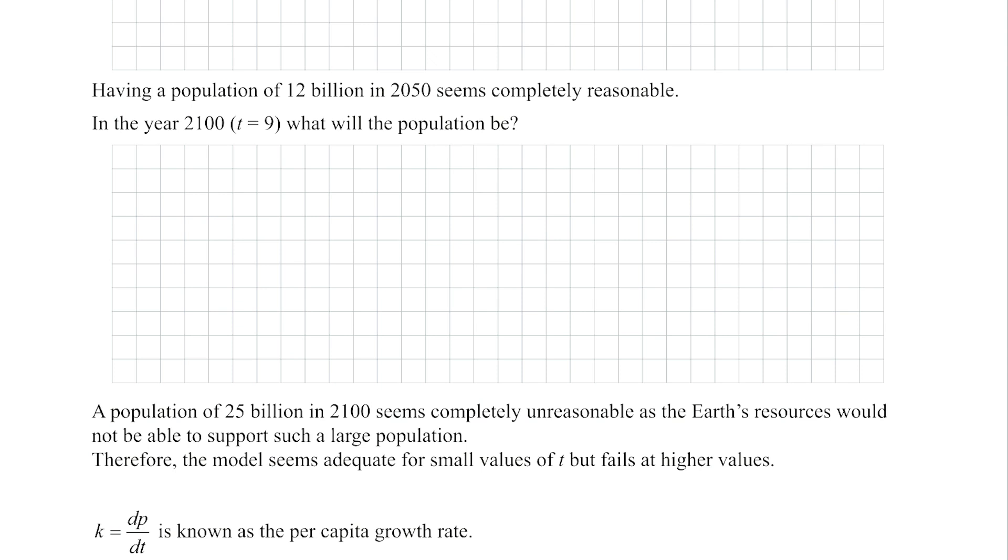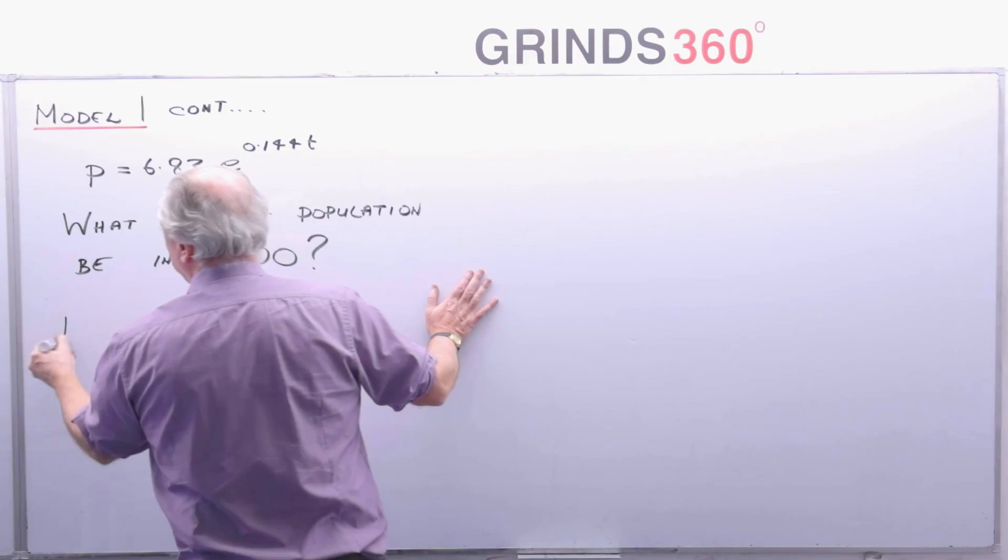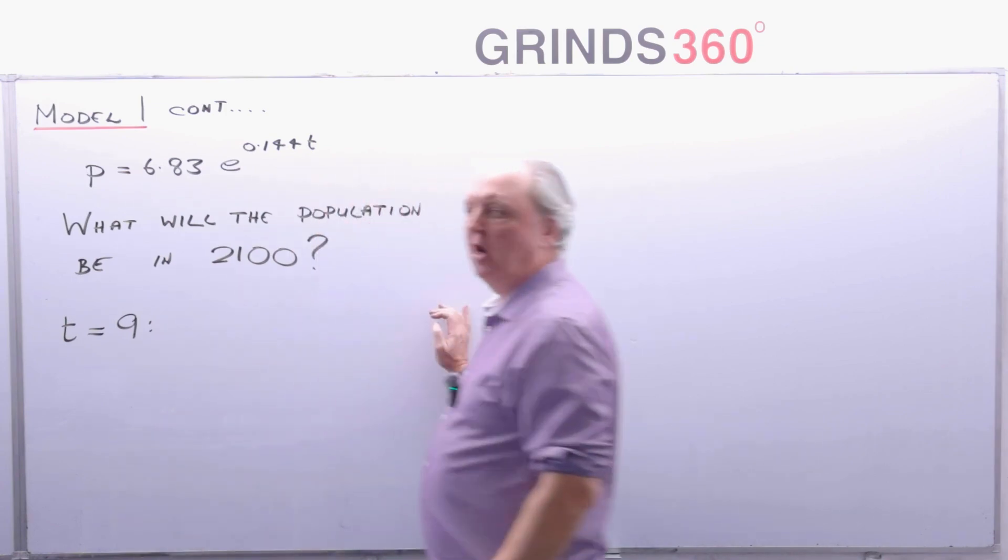So let me test my equation, my solution a little bit more. So it says, in the year 2100. That is 90 years after when we started, which was 2010. That means 9 decades, t is equal to 9. What will the population be?